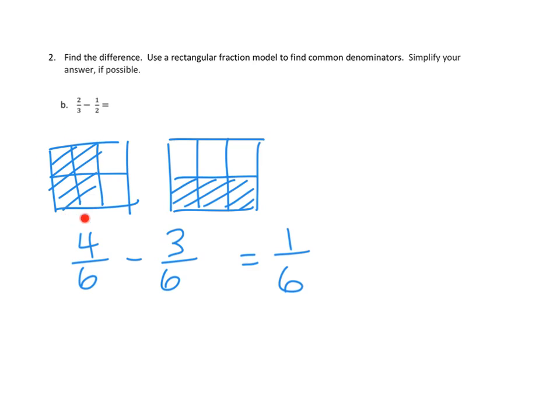Since we're doing subtraction, we started with 4 sixths. And we can basically cross out 3 sixths. And that will show us visually that there's only 1 sixth remaining. And I have no problem with doing that. It just seems like once I've gotten to this point, I'm okay with going ahead and just doing that as mental math rather than following through on our model.